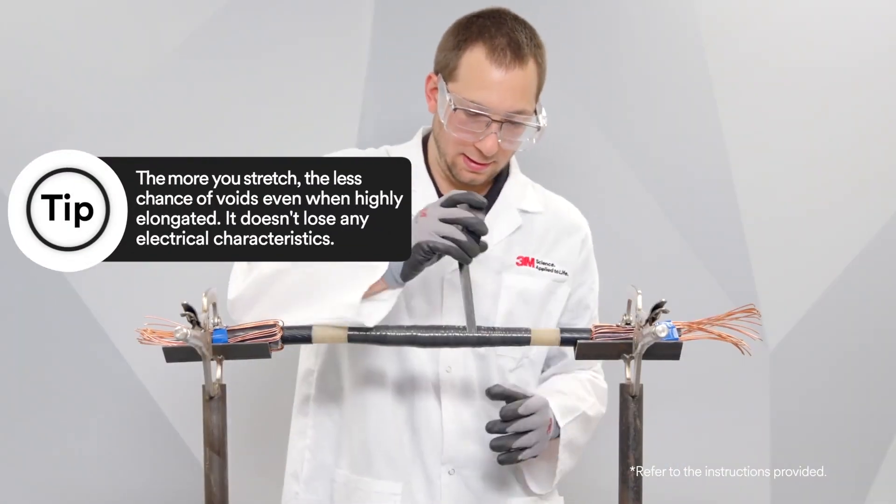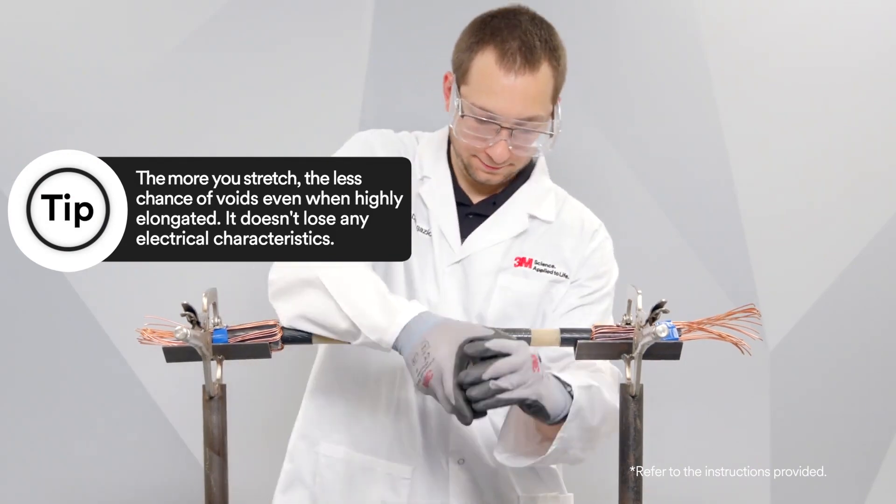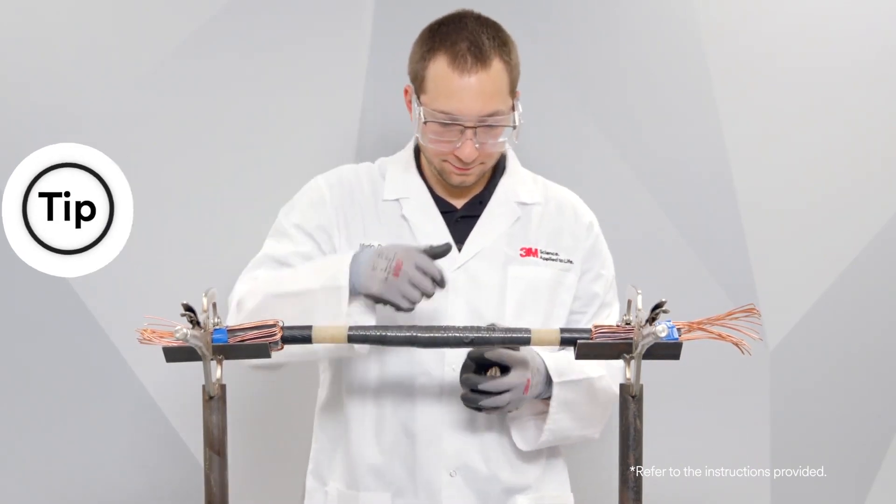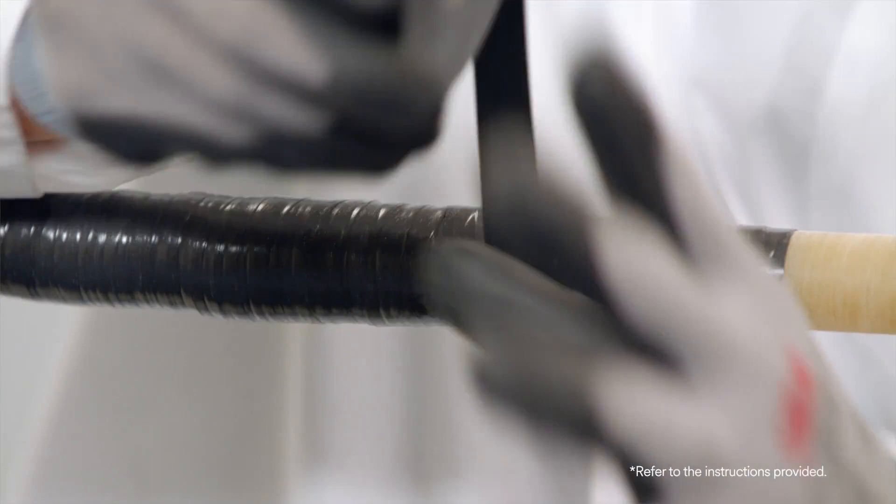If the Scotch Linerless Rubber Splicing Tape 130C breaks while applying, all you need to do is start wrapping again three-quarter of an inch back from the break.